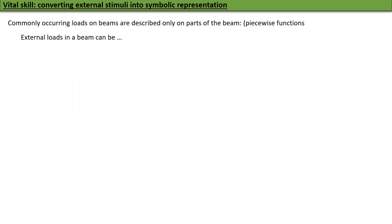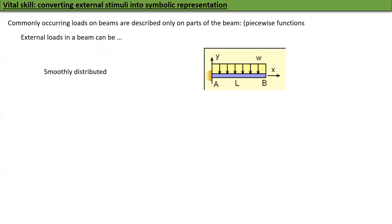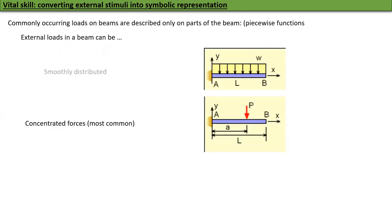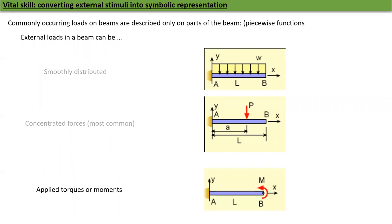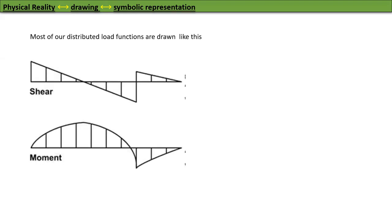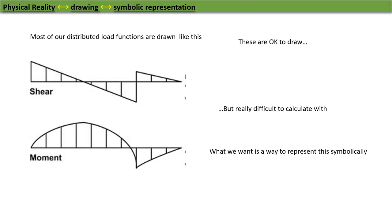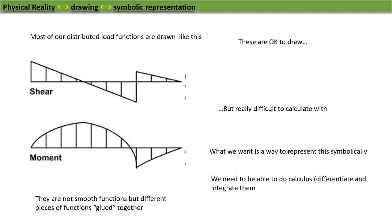Commonly occurring loads on beams are described only on parts of the beam — these are called piecewise functions. External loads on a beam can be smoothly distributed, or they could be a concentrated force — which is very common — or applied torques or moments, which shows up occasionally. We have to convert physical reality through a drawing into symbolic representation. Most distributed load functions look great for drawing but are terrible for calculating. We need a way to represent all of these functions and be able to differentiate and integrate them.